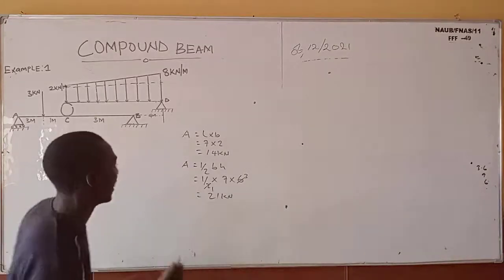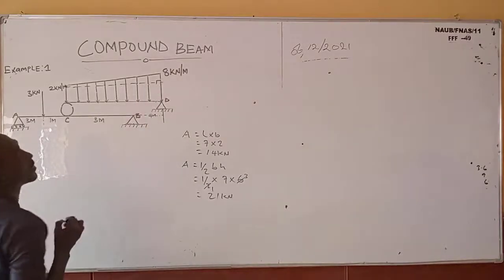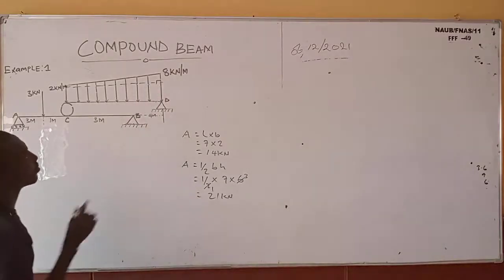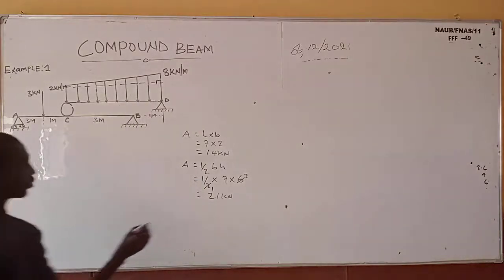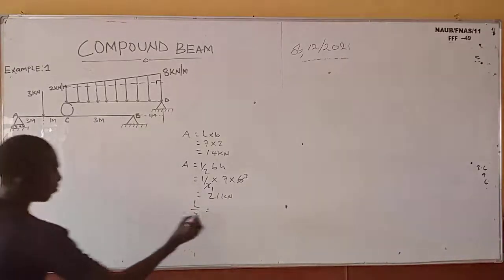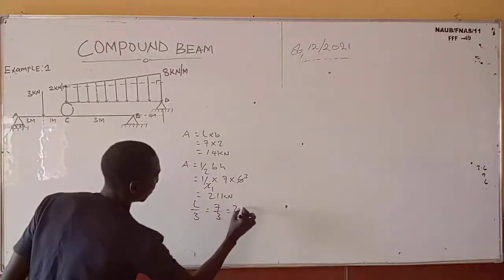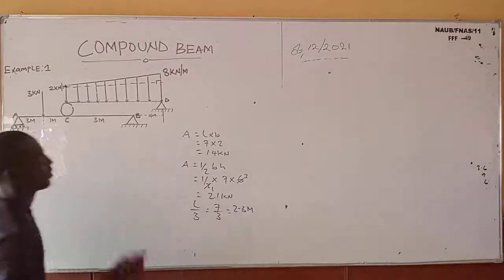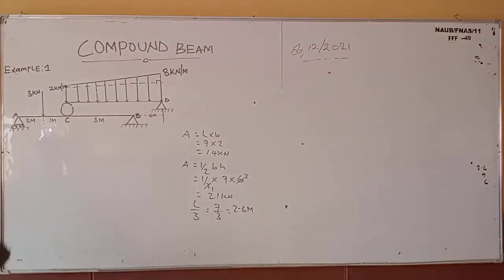The next thing is to find the position at which the triangular load acts. The triangular load acts at L over 3 away from the 90-degree end. So L over 3 is 7 divided by 3, which gives us 2.3 meters. So the 21 kN triangular load acts at 2.3 meters away from the 90-degree end.